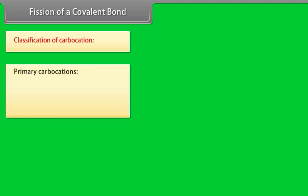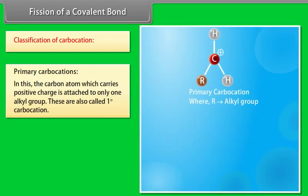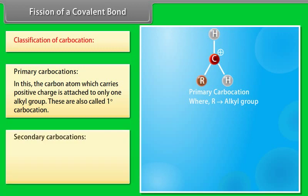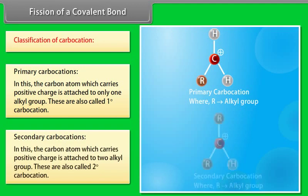Classification of carbocations: In primary carbocations, the carbon atom which carries positive charge is attached to only one alkyl group — also called one degree carbocation. In secondary carbocations, the carbon atom which carries positive charge is attached to two alkyl groups — also called two degree carbocation.